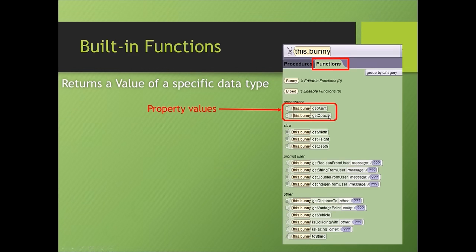Paint and opacity are properties of an object, so it would return a property value. Get width, get height, get depth will return a decimal number. Get width could be 2.5, get height could be 4.1, get depth could be 9.2.